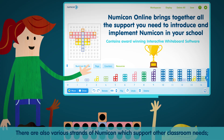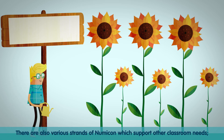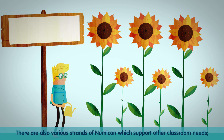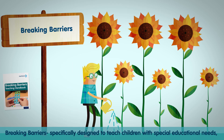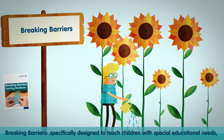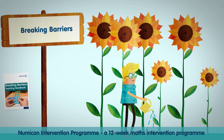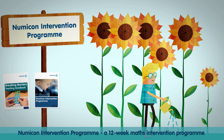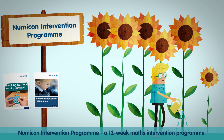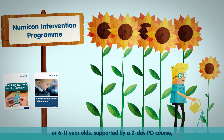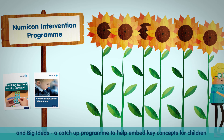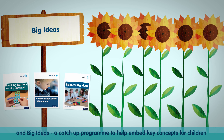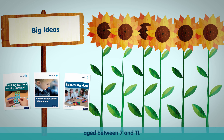There are also various strands of Numicon which support other classroom needs. Breaking Barriers is specifically designed to teach children with special educational needs. The Numicon Intervention Programme is a 12-week maths intervention programme for 6 to 11-year-olds, supported by a 2-day professional development course. And Big Ideas is a catch-up programme to help embed key concepts for children aged between 7 and 11.